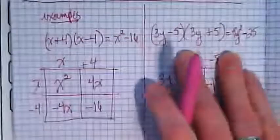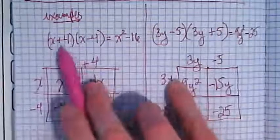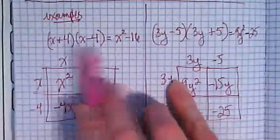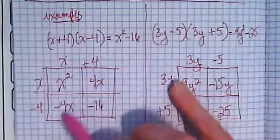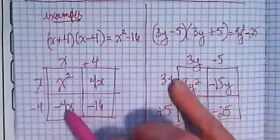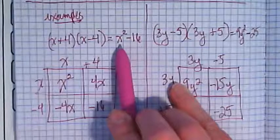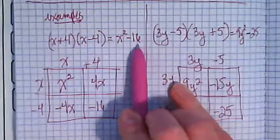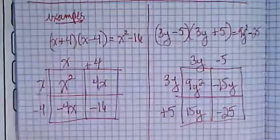So you'll see that pattern repeat as you guys do some practice on this. If I have the same terms with one positive and one negative, my center term, my like terms, are going to zero out. And I end up with a squared term in the front that's positive and a squared term in the back that's negative with no variables.